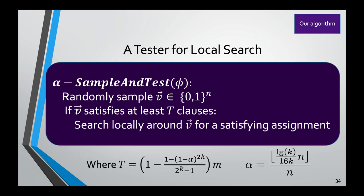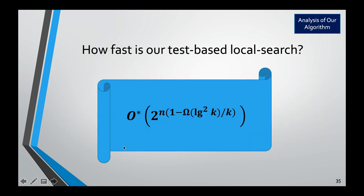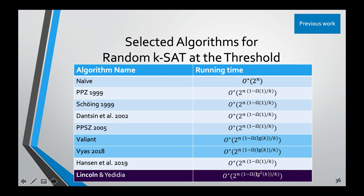Our algorithm achieves a runtime that is slightly better than the previous best. The previous best had runtime O(2^{N * (1 - Omega(log K / K))}). Our result introduces an additional log factor in the numerator — a second log — making our algorithm a little bit faster: O(2^{N * (1 - Omega(log^2 K / K))}).